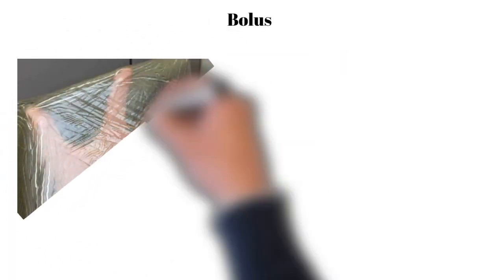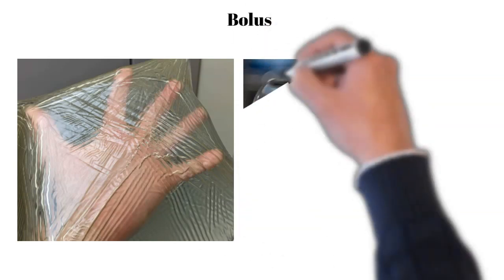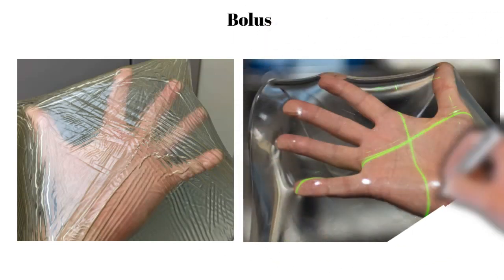So here's some example of bolus. It's kind of a jelly-like, flexible structure that's able to conform to the patient's surface. We can place this over the skin of the patient in order to achieve some desired dose level inside the patient or some desired dose falloff.